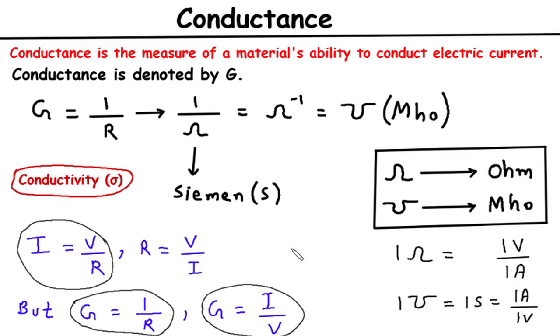These factors include the nature and composition of the substance, temperature, length, cross-sectional area, and the presence of impurities or defects. Materials such as metals generally have high conductance due to their free-moving electrons, which can easily carry electric charge.